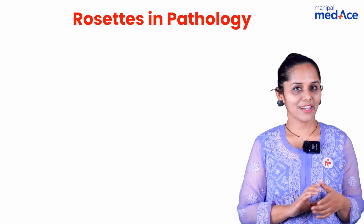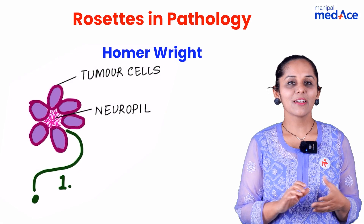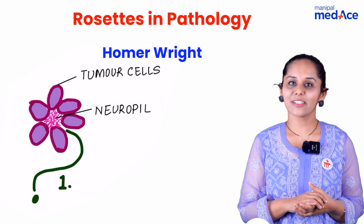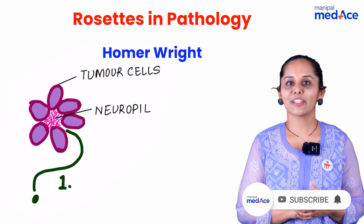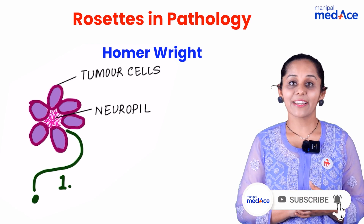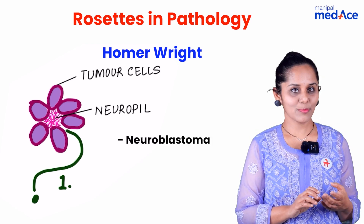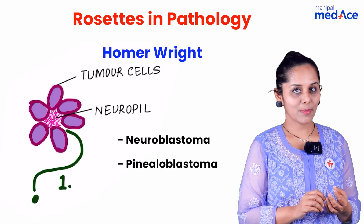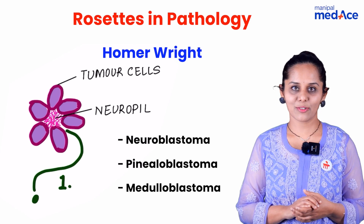The first such type is the Homer Wright rosette, where the central hub has got neuropil and you have the radial arrangement of tumor cells, which is characteristically seen in neuroblastoma and pinealoblastoma as well as in medulloblastoma.